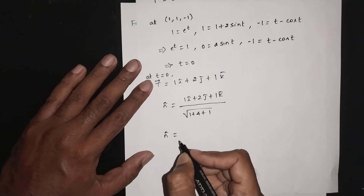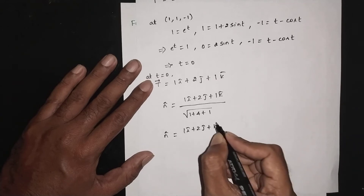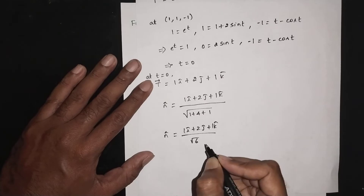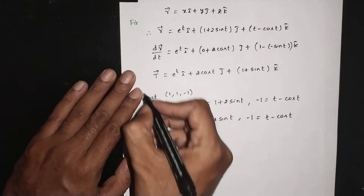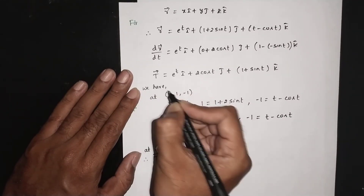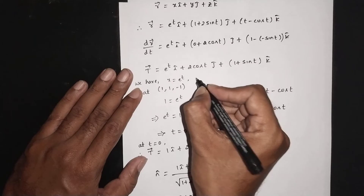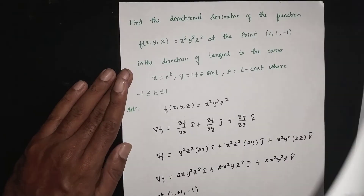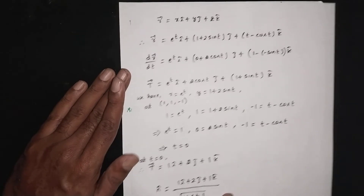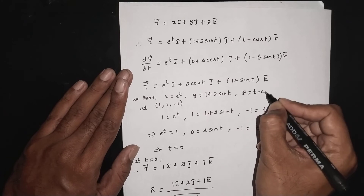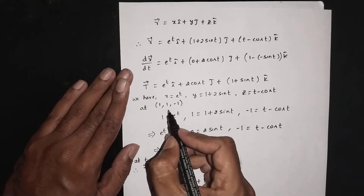At t = 0, the tangent vector is i + 2j + k. Now find the unit normal vector n̂ in the direction of this tangent. At the point (1, 1, -1), confirming x = e^(4t), y = 1 + 2sin(t), z = t - cos(t).